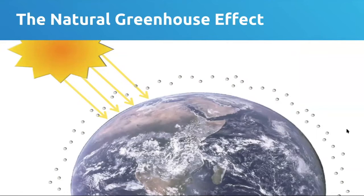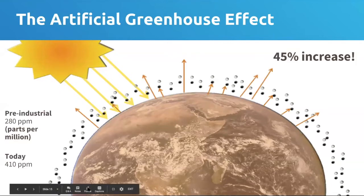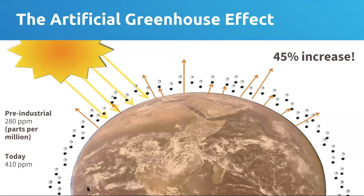The problem is that our extra CO2, emitted by burning fossil fuels, is enhancing this natural greenhouse effect and amplifying it. We've almost increased the strength of the greenhouse effect by 50%. Effectively, less of the energy from the sun that our planet's surface absorbs can make it back out into space.